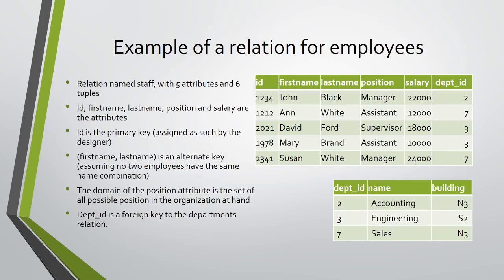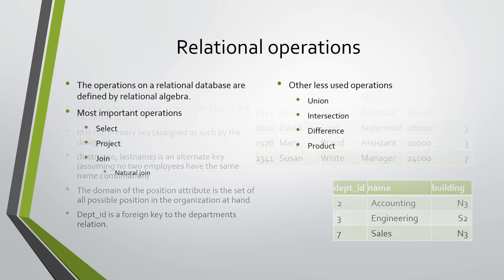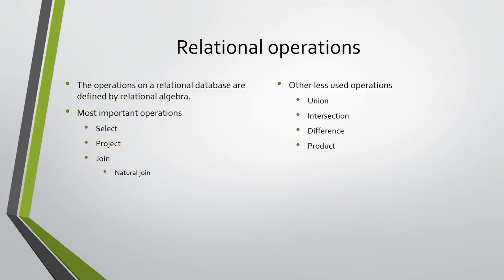The departments relation has an attribute for the department identification code which is a key in that relation. Note that the two relations are part of a simple relational database. The operations on a relational database are defined by relational algebra. However, we are going to discuss these operations without diving into relational algebra and mathematical notation. The most important operations are select, project, and join. Other less frequently used operations are union, intersection, difference, and product.